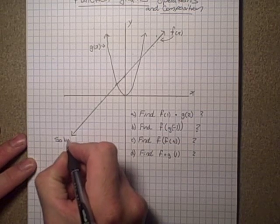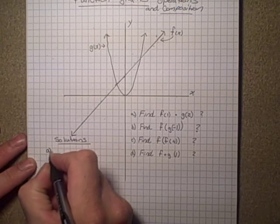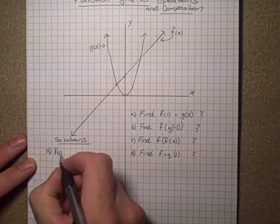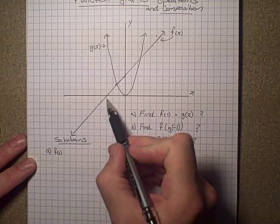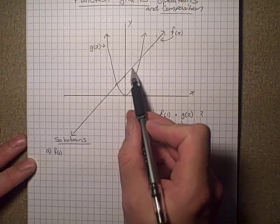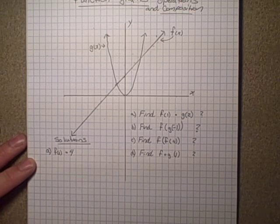In the solutions, we'll put here in a, f(1) - if we look at f(1), so here's 1, f(1) is actually 1, 2, 3, 4, about 4. Not exactly but I'm going to say 4.